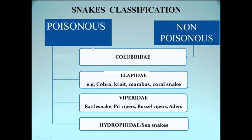The classification of snakes: snakes are either poisonous or non-poisonous, and we are concerned with the poisonous types here. There are three broad families of poisonous snakes: Elapidae, Viperidae, and Hydrophidae. Elapids include Cobra and Krait as the commonly occurring ones. The Viperidae family includes Rattlesnake, Pit Vipers, and Russell Vipers. Hydrophidae are sea snakes, as the name 'Hydro' suggests.